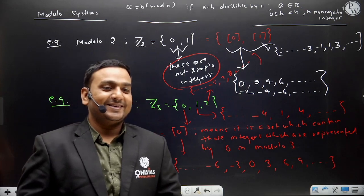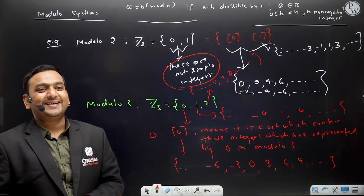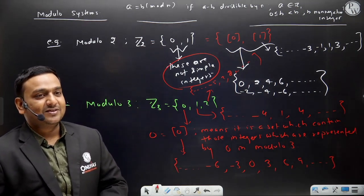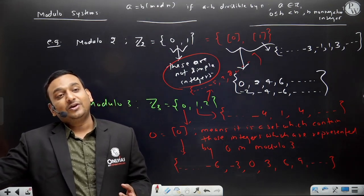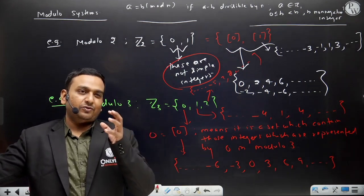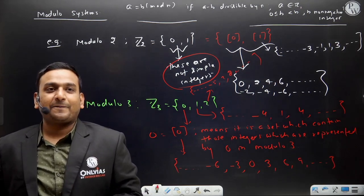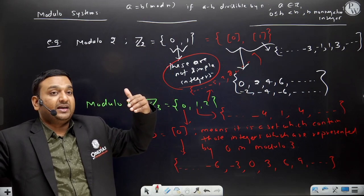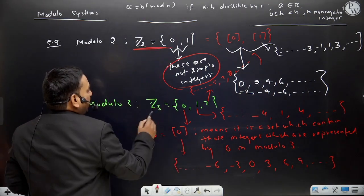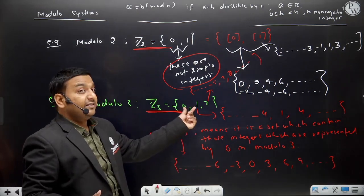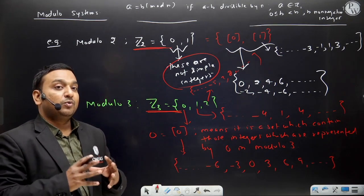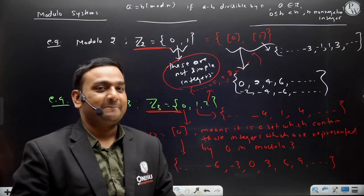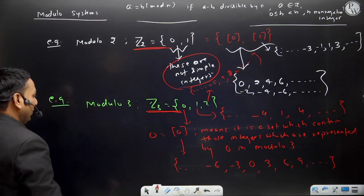Look at it carefully. Has the illusion broken or not? When any book writes it that way, the meaning is that a representation has been made. But as soon as it is attached with Z2 or Z3 - modulo 2 or modulo 3 - they are no longer simple integers, they have become modulo classes. And inside one modulo class, infinite numbers of integers can appear. Is that clear? Any difficulty?